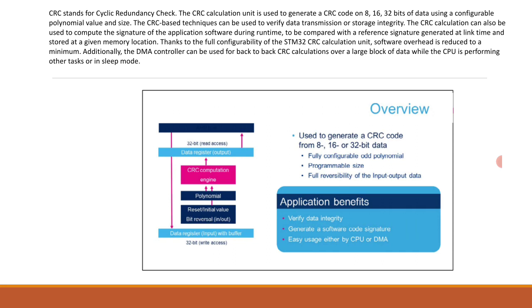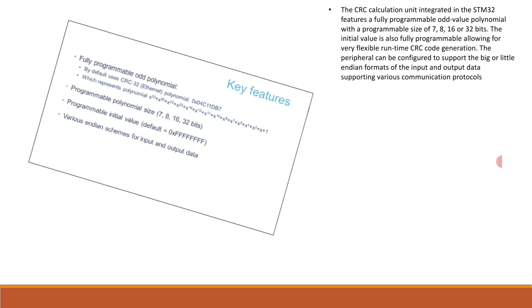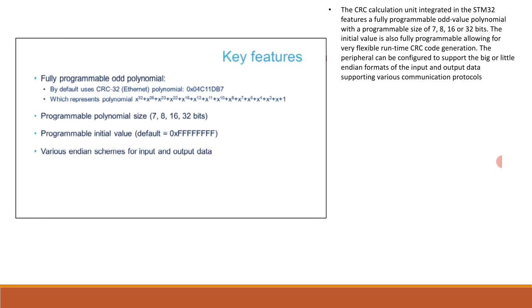Let's move on to the key features. The unit supports a fully programmable polynomial. By default, it uses the CRC-32 Ethernet polynomial: 0x4C11DB7, which represents the polynomial x^32 + x^26 + x^23 + x^22 and so on down to 1.